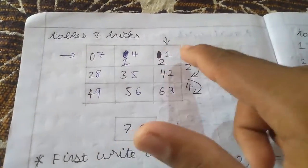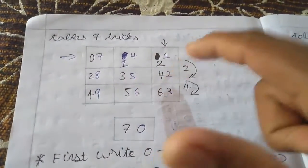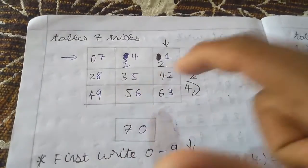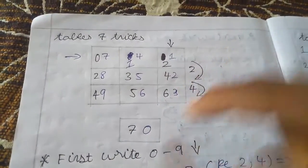1 times 7 is 07, 2 times 7 is 14, 3 times 7 is 21, 4 times 7 is 28, 5 times 7 is 35, 6 times 7 is 42, 7 times 7 is 49, 8 times 7 is 56, 9 times 7 is 63, 10 times 7 is 70.